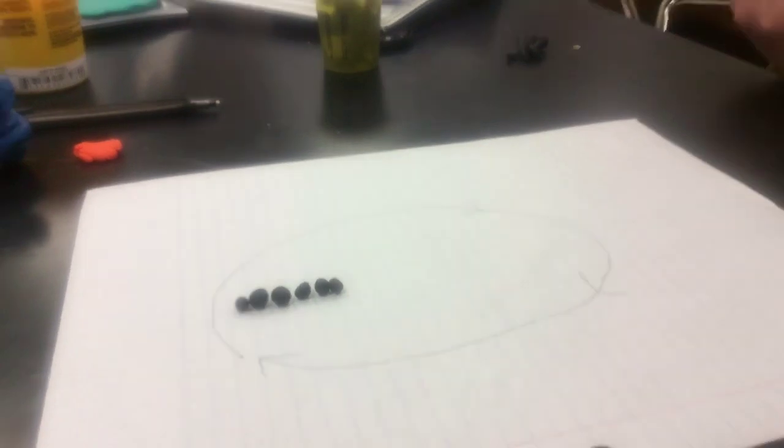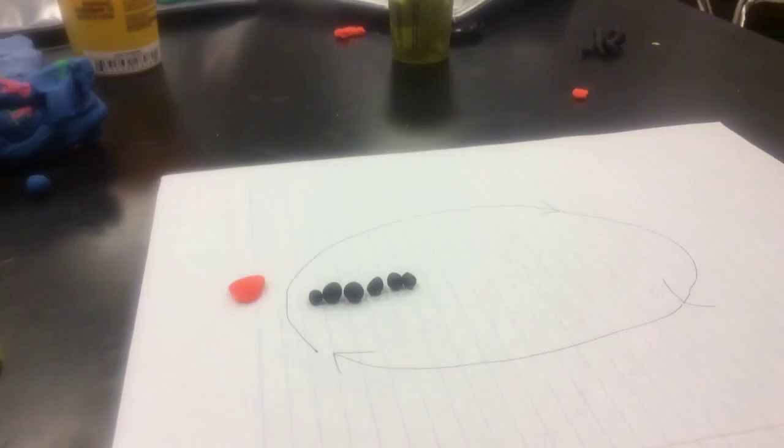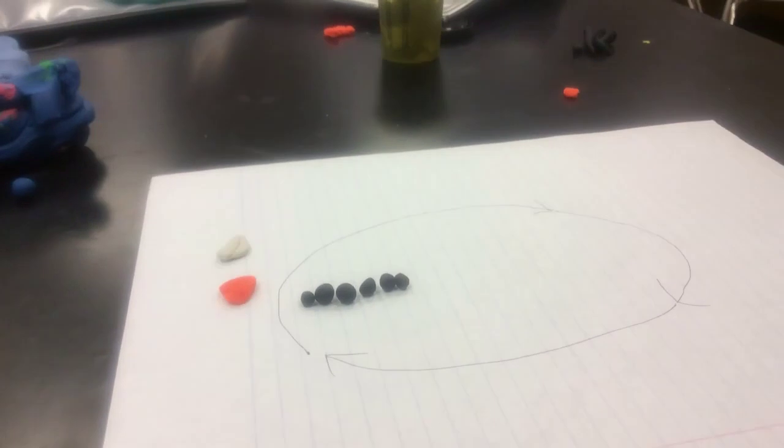Carbon dioxide molecules enter the cycle and are added to five-carbon molecules. Six-carbon molecules are then formed.